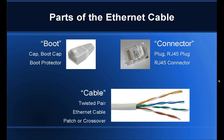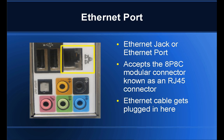Here we're looking at the I/O port at the back of the computer, and highlighted in yellow you'll see an ethernet jack or ethernet port. You'll notice that it is wide and rectangular, and you'll also notice the typical networking symbol of the three different computers connected through a wire. The ethernet jack accepts the 8P8C modular connector that's known as the RJ45 connector.